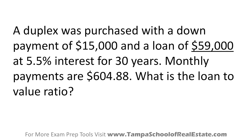We can eliminate some information here to make this easier. The 5.5% interest rate, the 30-year term, and the payment of $604.88 are all irrelevant distractors — extra information put in these questions to throw you off and find out if you really know what you're doing. What we're left with is our $15,000 down payment and our $59,000 loan amount.